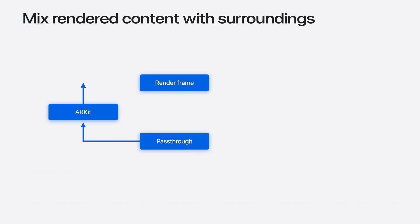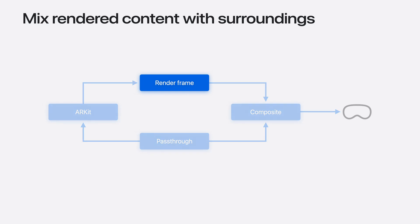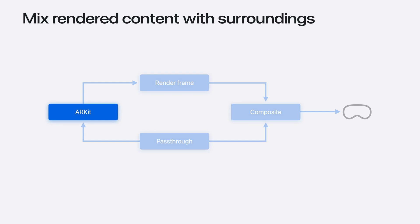In mixed immersion style, both rendered content and the person's physical surroundings are visible. There are a few steps to make sure this effect is as realistic as it can be. First, you will clear your drawable texture to the correct value — that value is going to be different from the one you may have used in full immersion style. Second, ensure that your rendering pipeline is producing correct color and depth values, like pre-multiply alpha and P3 color space, which is what VisionOS expects. Then, you will use the scene understanding provided by ARKit to anchor your rendered content in the real world and perform physics simulations. Finally, you will designate the type of upper limb visibility that fits your app's experience.